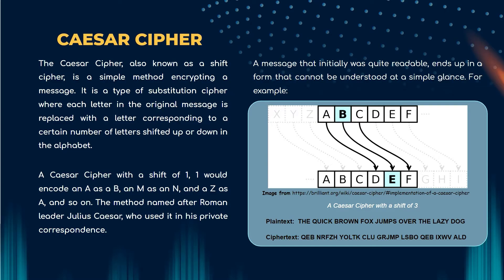Next, the cryptology that we are going to explain is about the Caesar cipher and affine cipher. The Caesar cipher, also known as a shift cipher, is a simple method of encrypting a message. It is a type of substitution cipher where each letter in the original message is replaced with a letter corresponding to a certain number of letters shifted up or down in the alphabet. A Caesar cipher with a shift of one will encode an A as B, an M as an N, and a Z as an A. The method is named after the Roman leader Julius Caesar, who used it in his private correspondence. A message that initially was quite readable ends up in a form that cannot be understood at a simple glance.